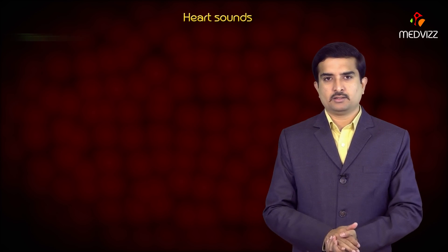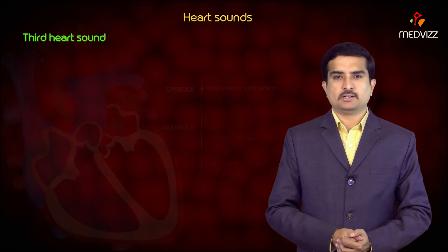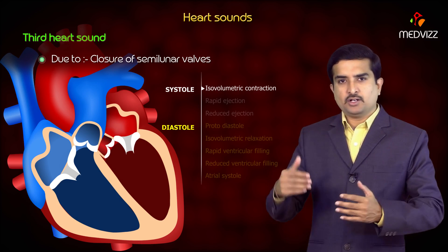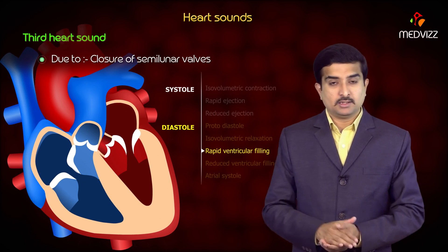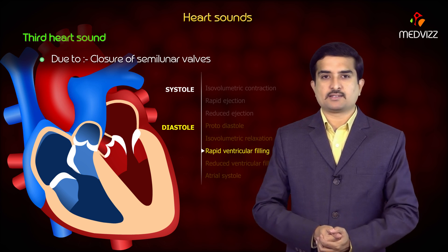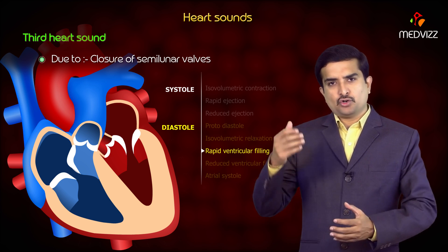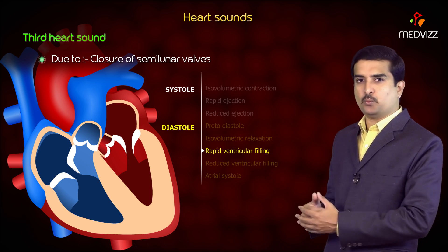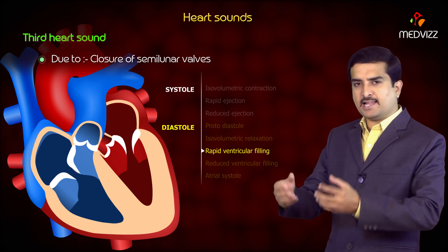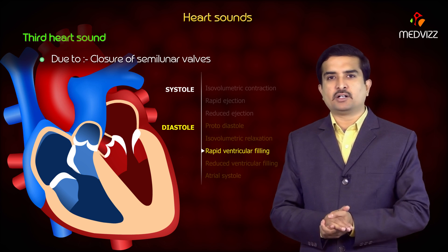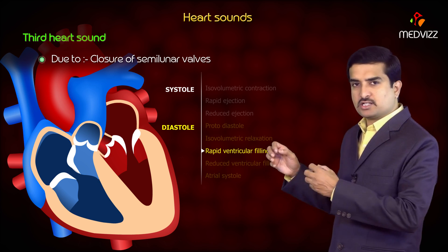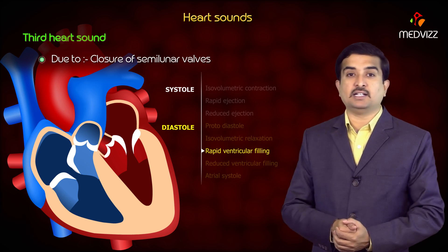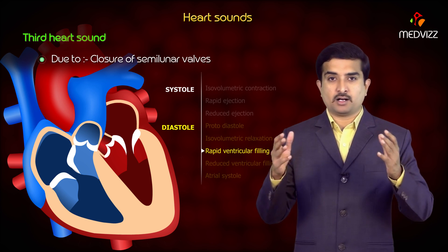Next is the third heart sound. The third heart sound is mainly seen during the rapid filling phase of the cardiac cycle. It is mainly due to rapid filling of blood into the ventricles, and this filling is responsible for vibrations created in the chordae tendineae, which are responsible for the development of the third heart sound.